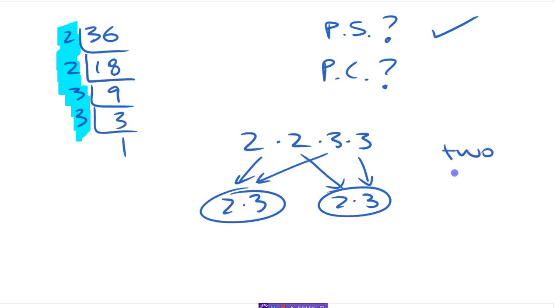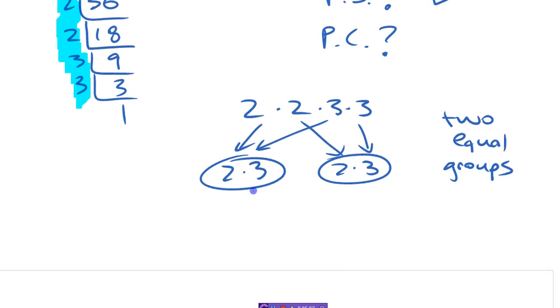So you got two equal groups. If you have two equal groups, then you know it has to be a perfect square because this gives you 6, this gives you 6. You got two things that multiply to give you that number. If you can make two equal groups, it has to be a perfect square.